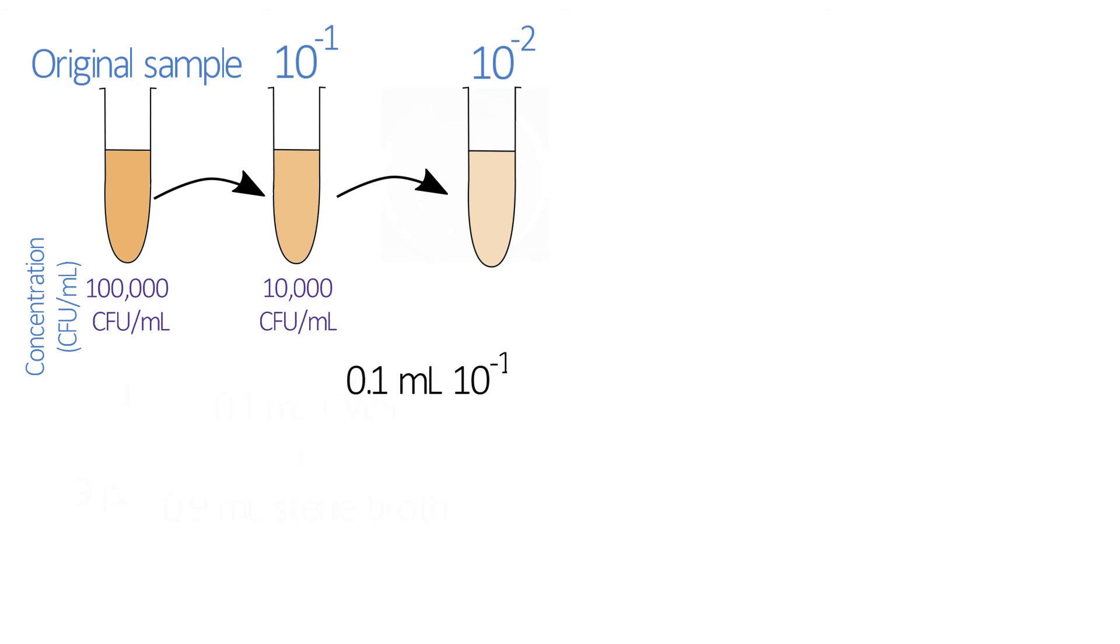So we'll take 0.1 ml of the ten to the minus one dilution and add it to a fresh 0.9 ml of sterile nutrient broth. So this has now been diluted a hundred times compared to the original sample, so we'd expect this sample to have 1,000 colony-forming units in it. We can keep doing this again and again to set up a series of dilutions.